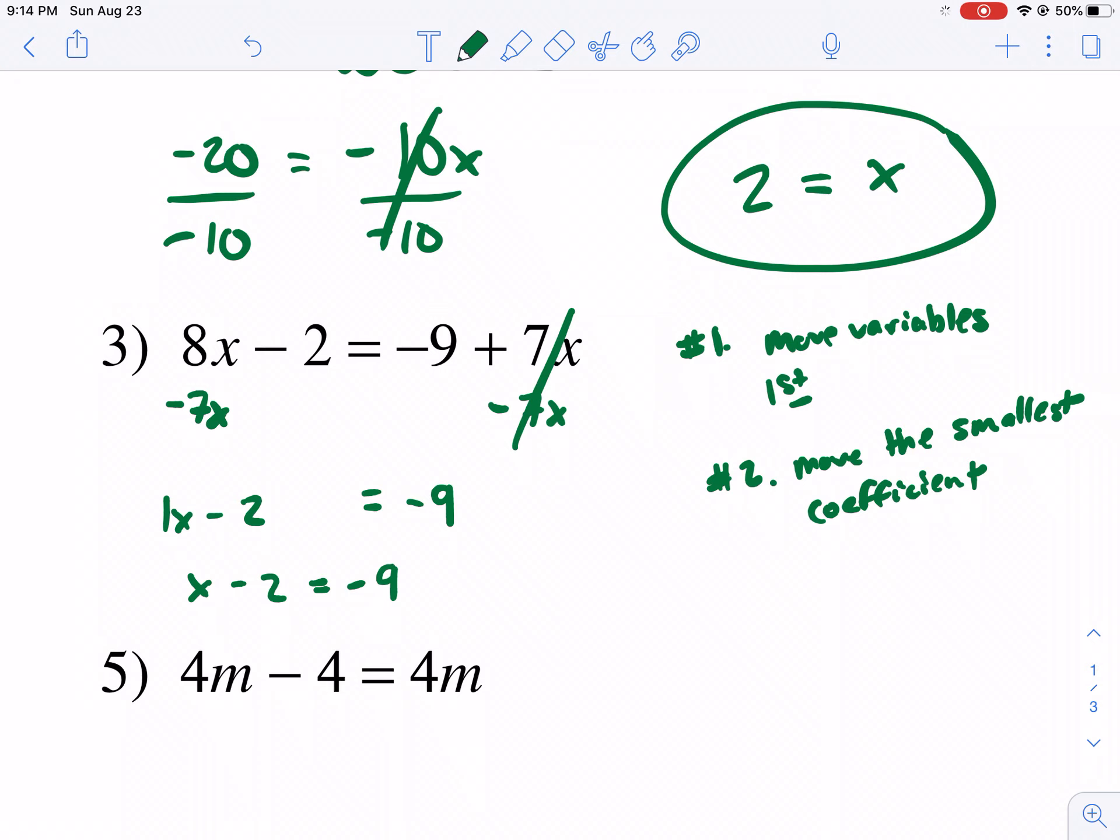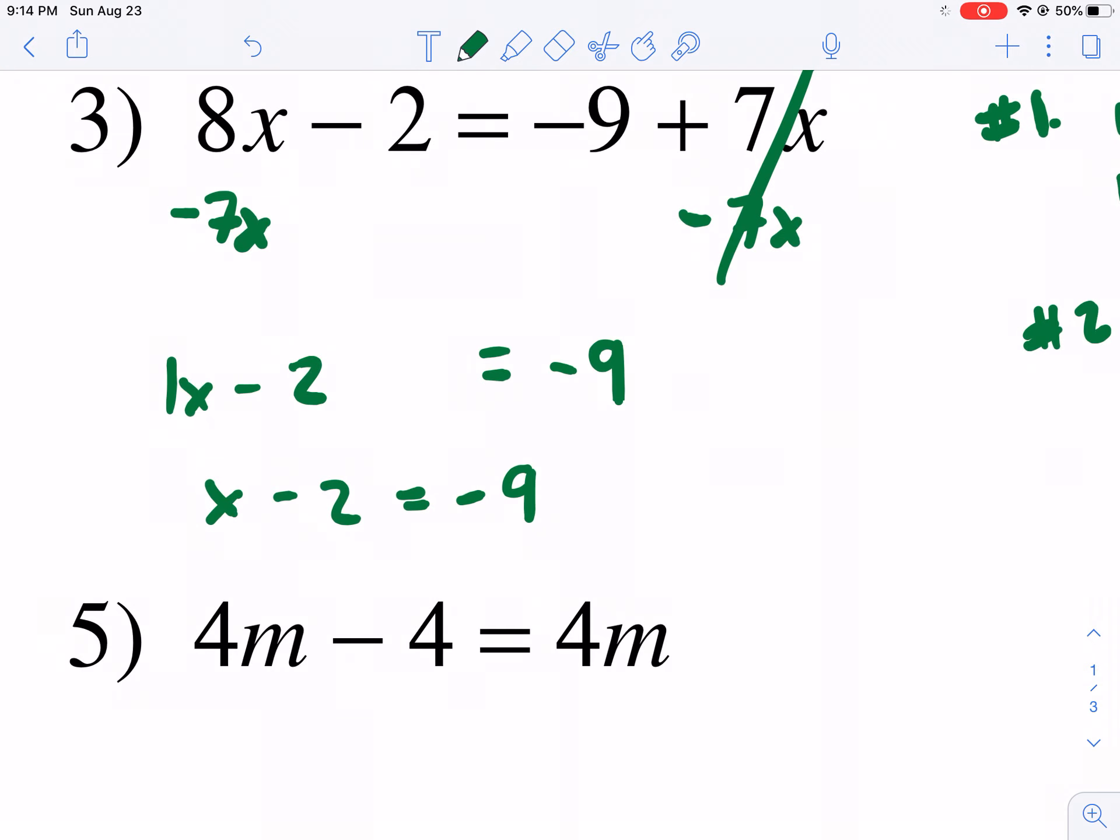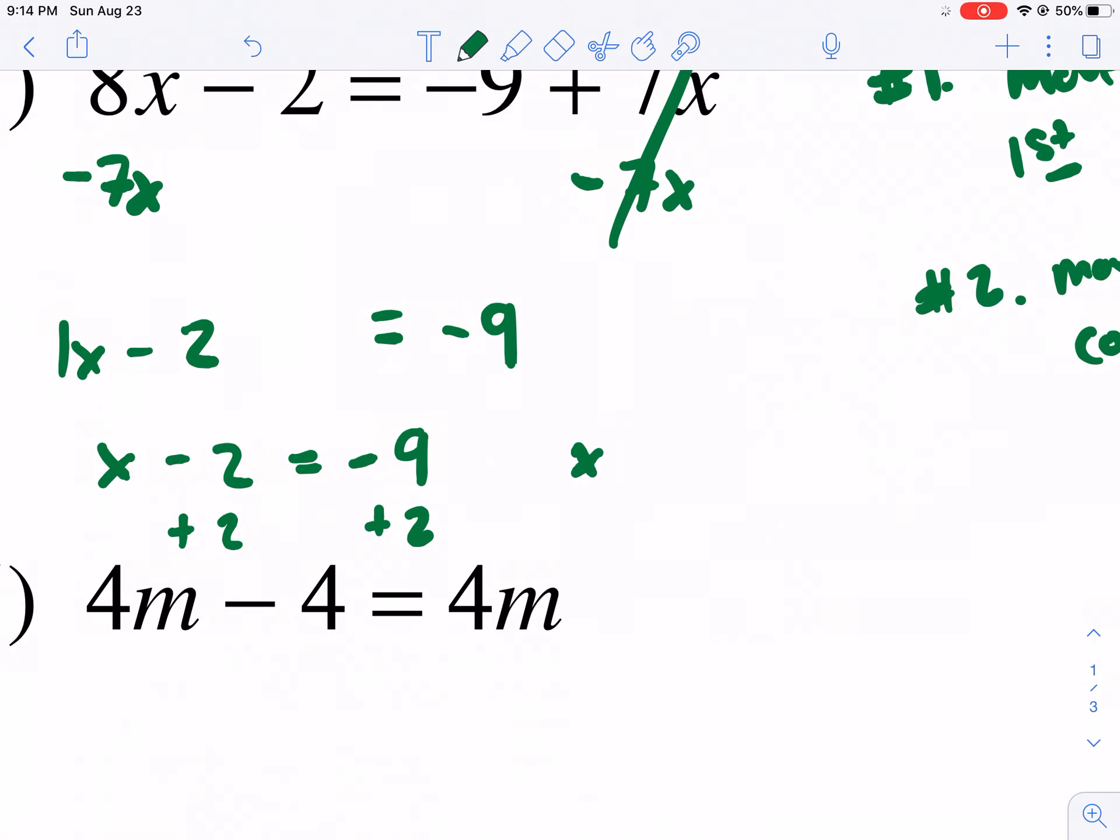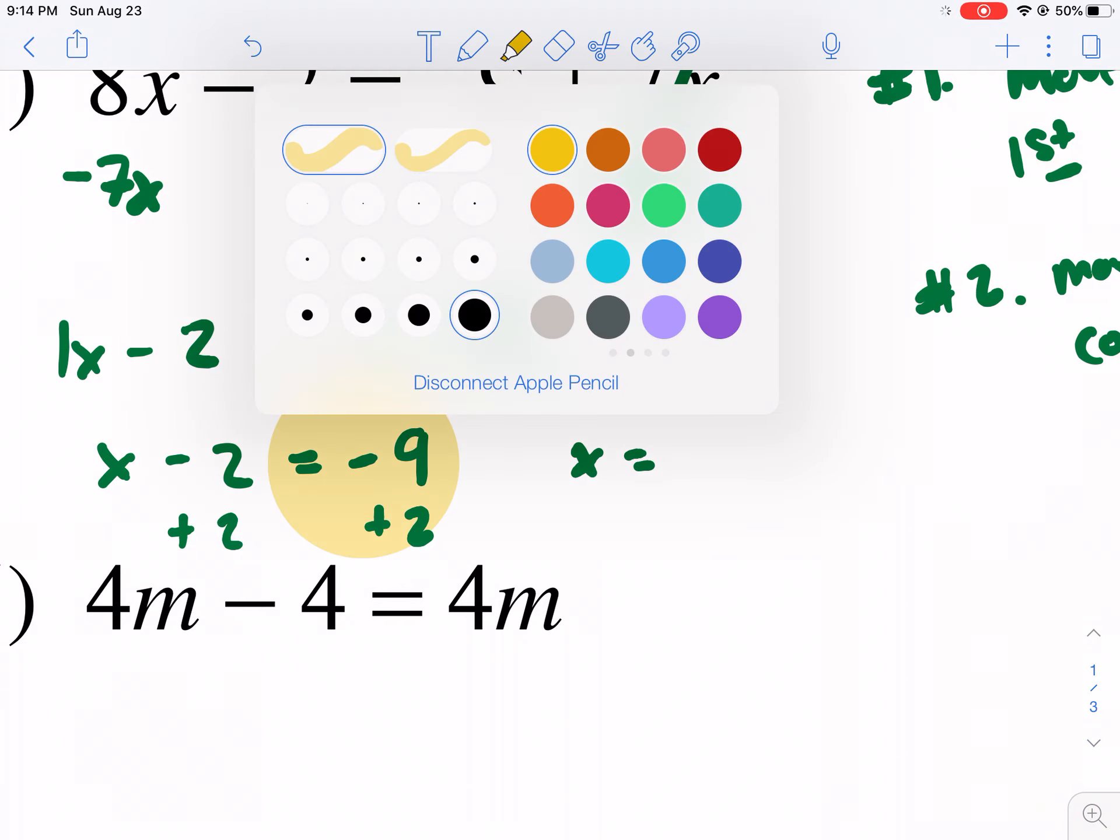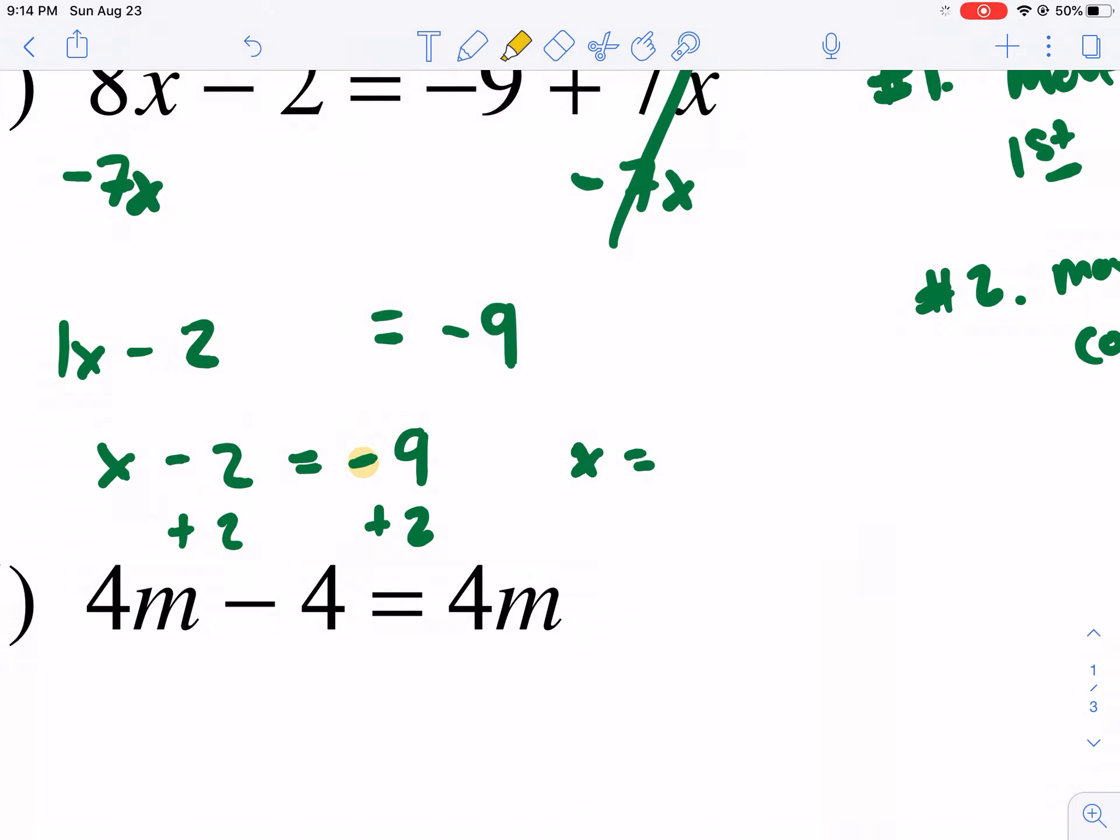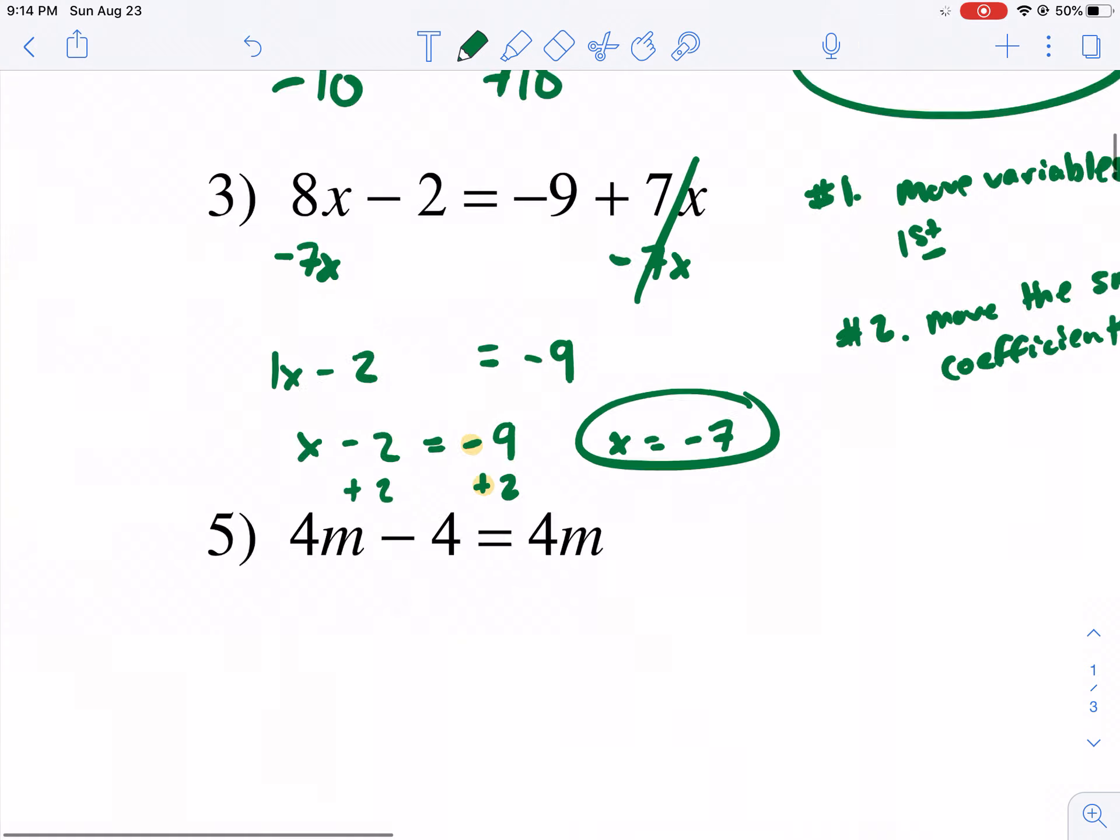And now we're back to a two-step equation. We're going to try to get the x by itself. Isolate the variable by adding the or doing the opposite operation. In this case, we're going to add 2. We get x equals, here we have opposite signs. The bigger one is negative, so the negative wins by 7 points. There's our answer, negative 7.